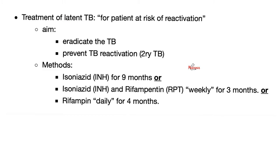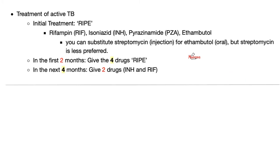If the patient does not have active TB but has latent TB, why are you treating? To decrease the risk of reactivation. Treatment options: isoniazid for 9 months, or isoniazid and rifampin for 3 months, or rifampin daily for 4 months.